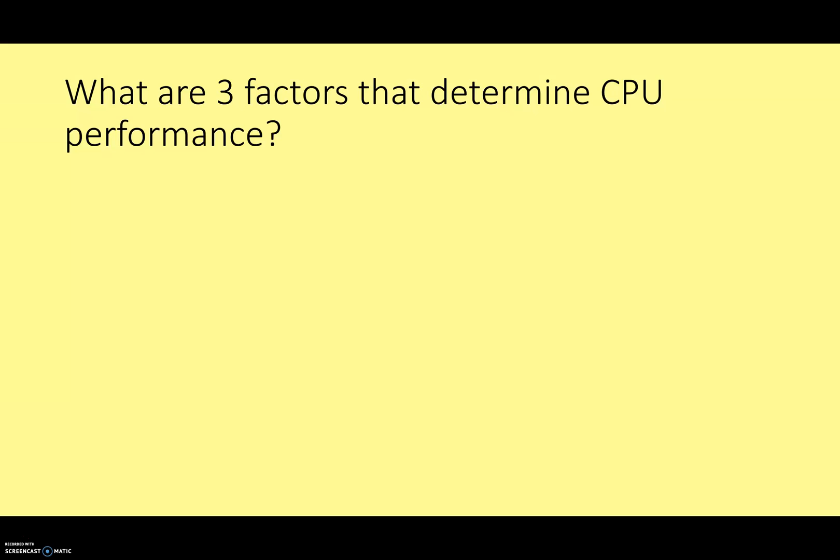So what are the three key factors that determine CPU performance? The three we're going to concentrate on today are clock speed, the number of cores, and cache memory. As well as these three, I will look at a couple of other factors that may be important, but certainly these three are the key factors that you really want to concentrate on.